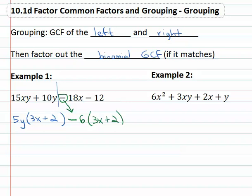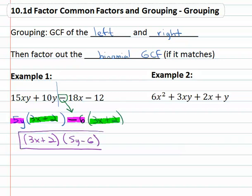Now we look at what's left. Do the binomials match? They sure do—they both have 3x + 2. So we can factor out the 3x + 2, and then what's left, 5y - 6, becomes the other factor. And now the expression is completely factored.